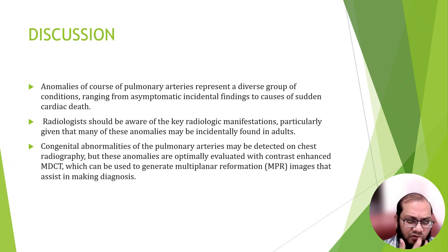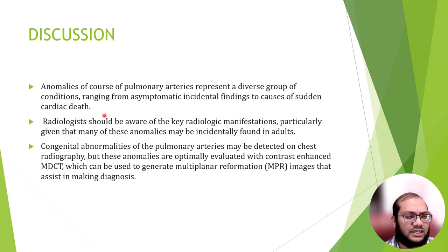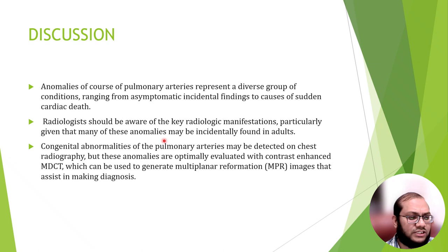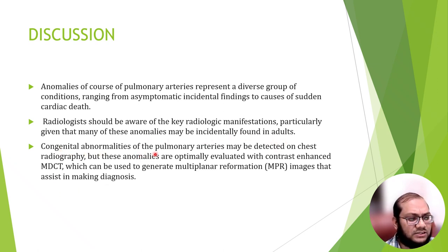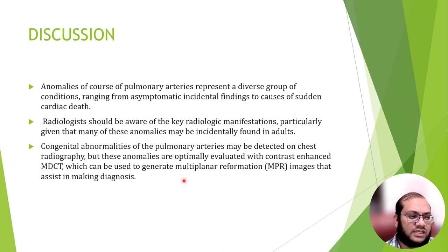Anomalous course of pulmonary arteries represents a diverse group of conditions ranging from asymptomatic incidental finding to cause of sudden death. Radiologists should be aware of key radiological manifestations, particularly given that many of these anomalies may be incidentally found in adults. The congenital abnormalities of pulmonary arteries may be detected on chest X-ray, but these anomalies are optimally evaluated with contrast-enhanced multi-detector CT, which can be used to generate multiplanar reformation images that can assist in making a diagnosis.